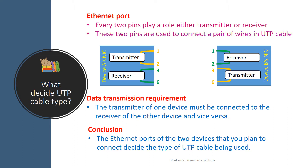These two pins are used to connect a pair of wires in the UTP cable. To make it simple, our example shows two NICs with only four pins each. The NIC in device A has pin 1 and 2 as the transmitter and pin 3 and 6 as the receiver. However, the NIC in device B has pin 1 and 2 as the receiver and pin 3 and 6 as the transmitter.